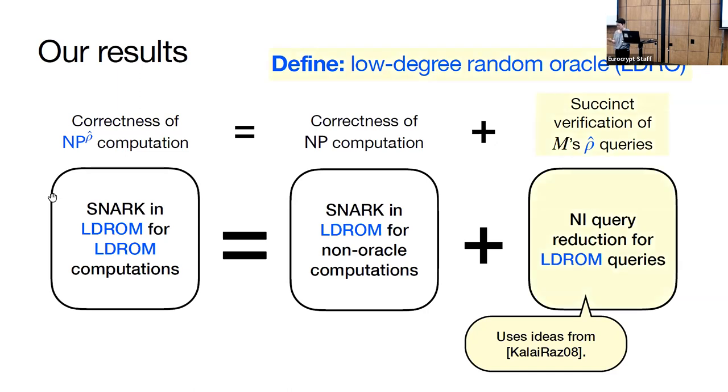For checking the correctness of non-oracle computations, we build a SNARK in the low-degree random oracle model. For verifying oracle queries, we construct a non-interactive query reduction scheme that lets us batch oracle queries in each step of the computation and delay the verification of all the queries to a later time. This construction builds upon an interactive query reduction technique by Kalai and Raz from 2008. For the rest of the talk, I'll define and discuss the low-degree random oracle, and explain the ideas used for building our non-interactive query reduction scheme.